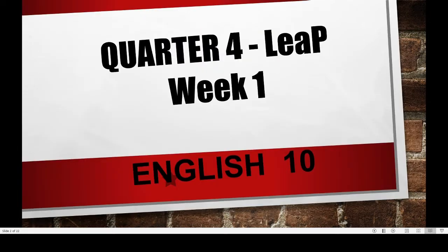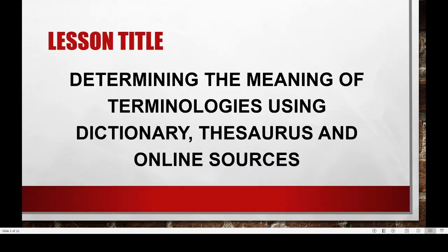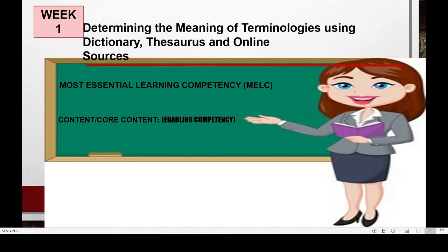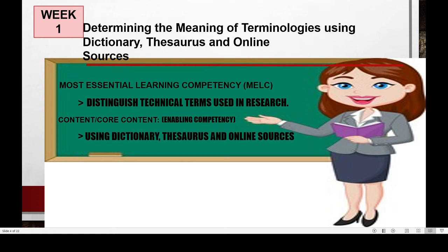We are now in the last quarter in our Pivot 4A Learner's Pocket or Leap Mojo, quarter 4, week 1. Our first lesson is about determining the meaning of terminologies using dictionary, thesaurus, and online sources. Our most essential learning competency is to distinguish technical terms used in research. Our core content or enabling competency is using dictionary, thesaurus, and online sources.